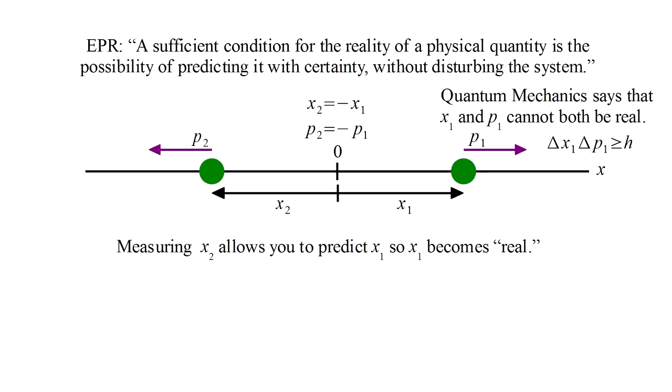Now suppose we make a measurement on particle two. If we measure its position, x2, then due to the relationship between x1 and x2, we can predict x1 with certainty, without having disturbed particle one. So x1 becomes real.